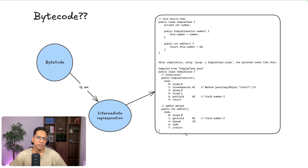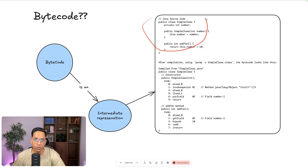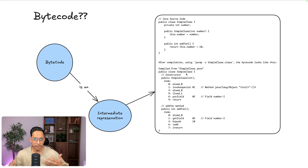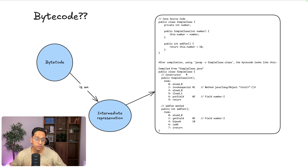What is bytecode? It's basically an intermediate representation of your source code — the language you use for writing your code. For example, Java source code — a simple class with a number, a basic constructor, and a simple function. But how does it get converted for the JVM to understand? The JVM doesn't know anything about the Java language; it knows about a certain binary format, which is the class file, which contains the bytecode.